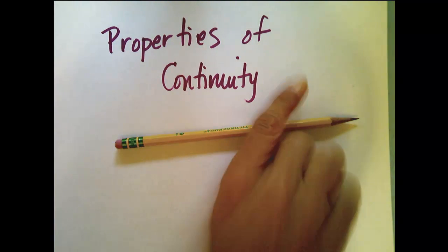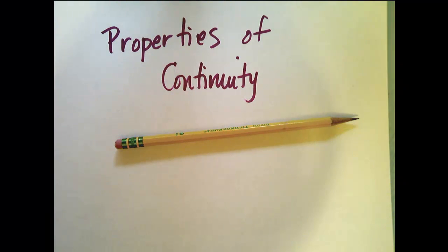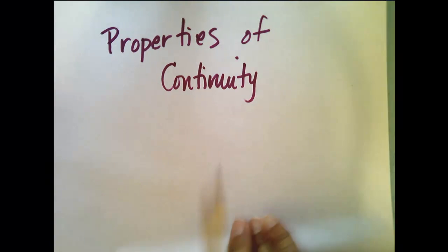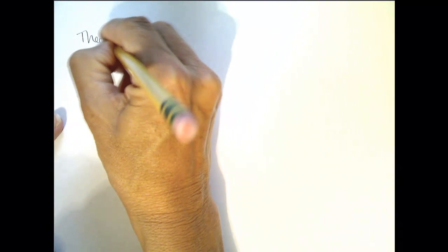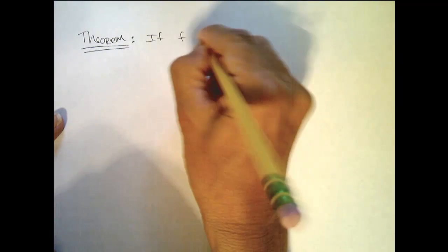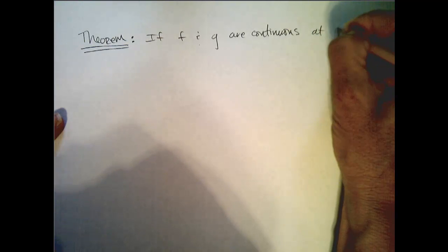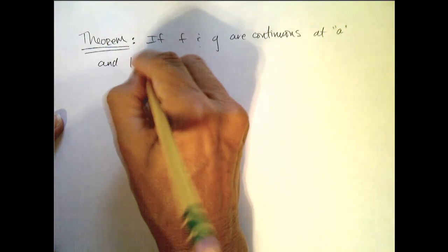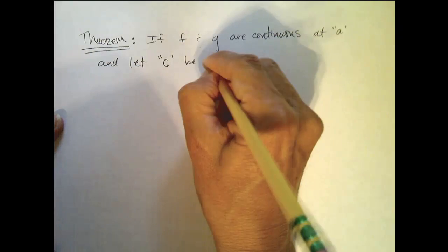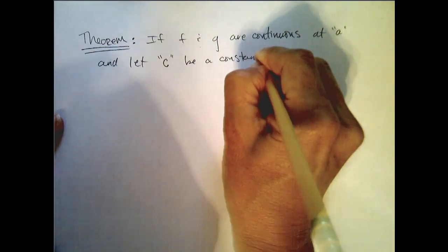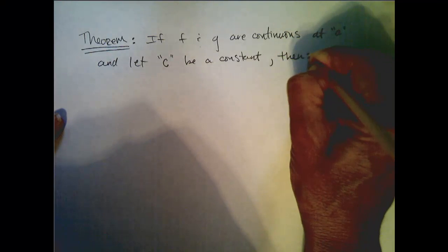In this video we're going to look at the properties of continuity and what they do for us. Let me start off with a theorem. We are going to assume that f and g are continuous at a, and let c be a constant. Then we get the following things.